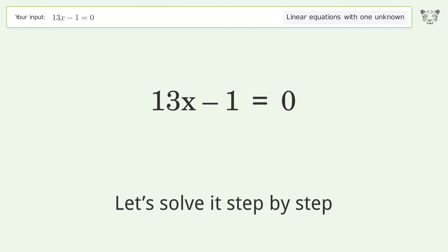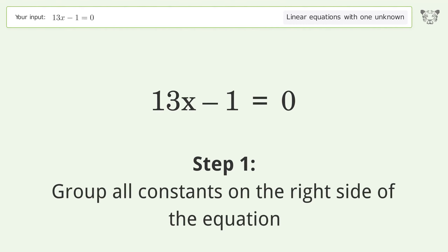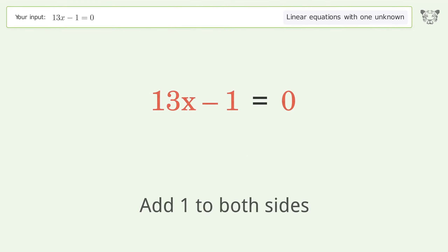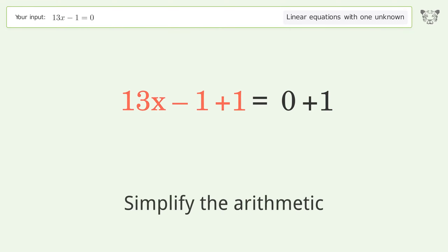Let's solve it step by step. Group all constants on the right side of the equation. Add 1 to both sides, then simplify the arithmetic.